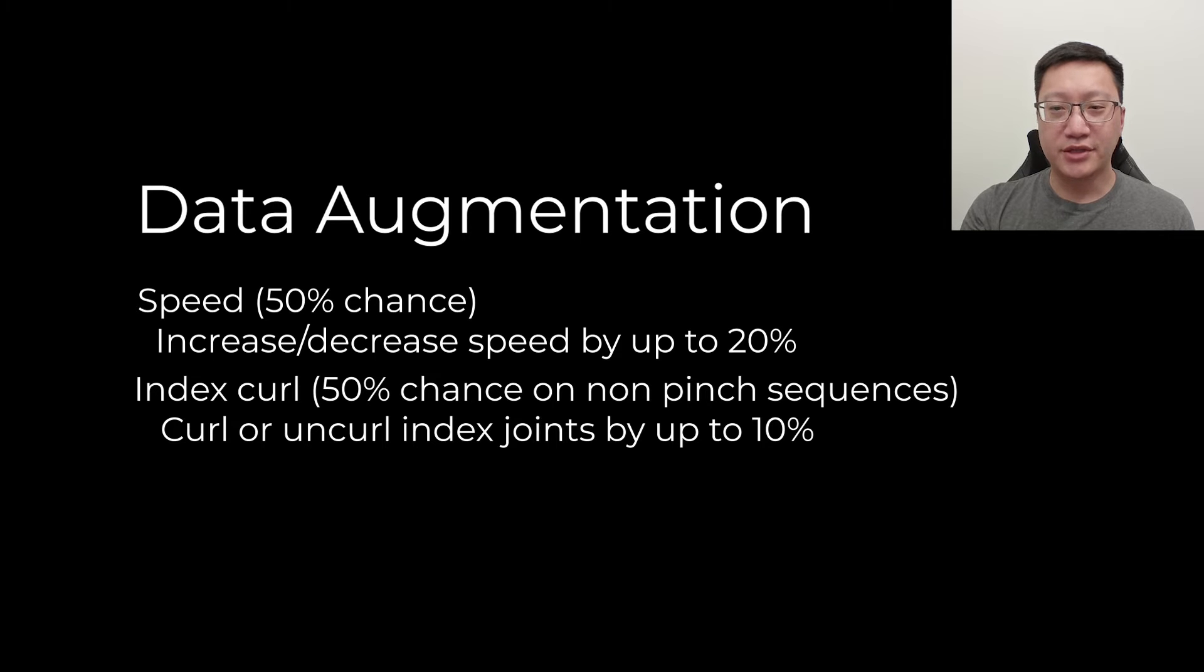We also add data augmentation to add variety to the training sequences. Since we work on top of skeletal tracking, we can interpolate or manipulate the joint angles such as slowing or speeding of sequences and curling or uncurling the index finger to vary the amount of finger curl.